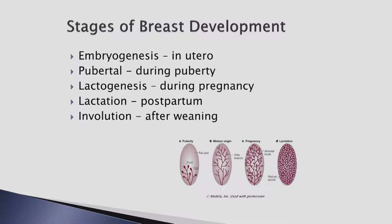When ovulation begins to occur, progesterone is excreted during the luteal phase. This starts the development of the alveolar structures in the glandular tissue of the breast. External visible development or enlargement can be seen from the internal development in the gland. However, the breast is not considered fully developed until after milk production has occurred. Before the onset of menstruation, branching of the ductal tree occurs.